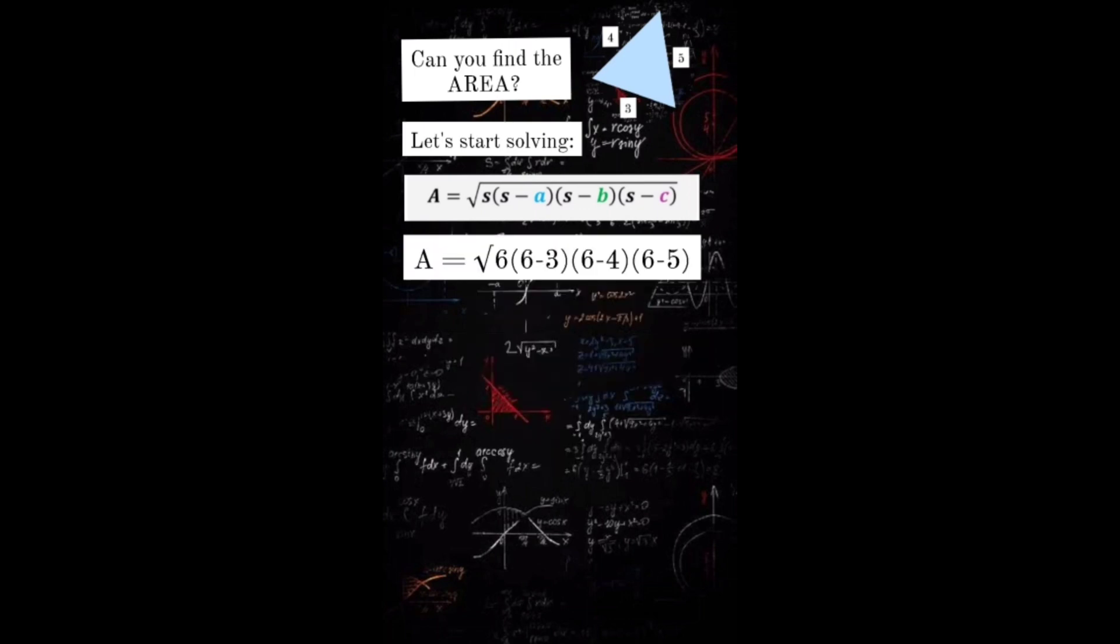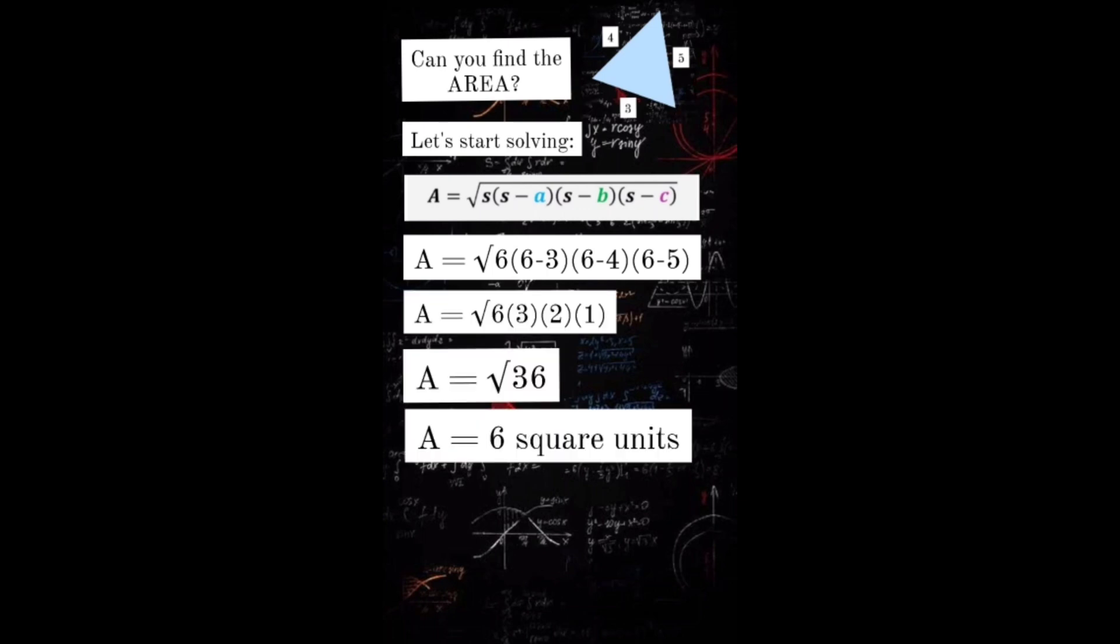Then, substitute the value of A, B and C. Third is simplify. Therefore, the area of the given triangle is 6 square units.